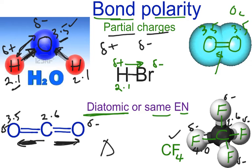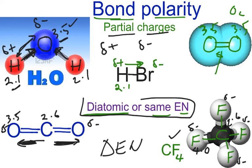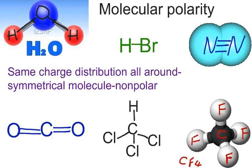You simply look at the difference in electronegativity. If you have an electronegativity difference, your bond is polar. But if you have the same electronegativity, you don't expect to have any partial charges. Now, molecular polarity is related to bond polarity, but there's a slight difference — we have to look at the symmetry of the molecule to determine overall if it's going to be polar or non-polar.